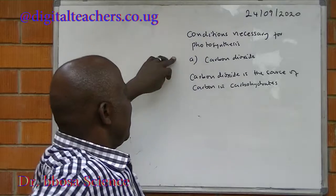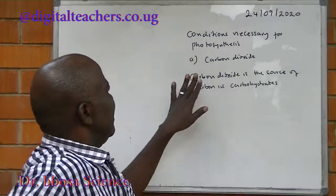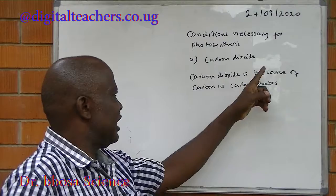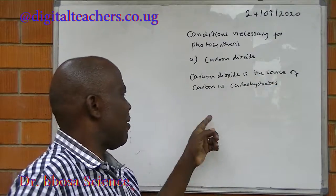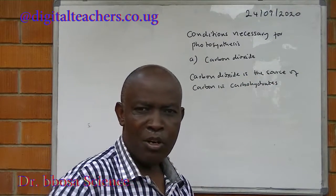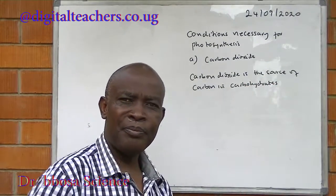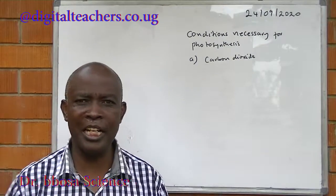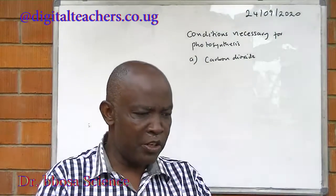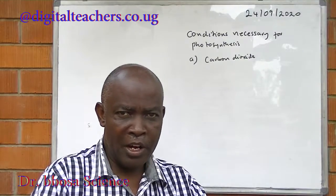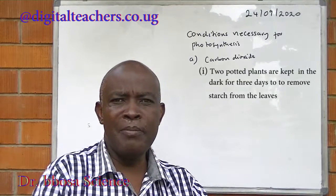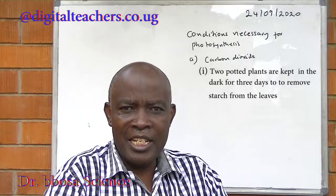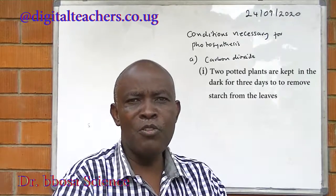Conditions necessary for photosynthesis. A: Carbon dioxide. Carbon dioxide is the source of carbon in carbohydrates. An experiment to show that carbon dioxide is necessary for photosynthesis: Two potted plants are kept in the dark for three days to remove starch.